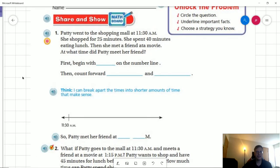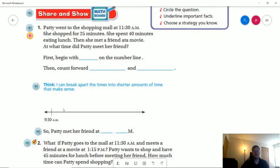So let's go ahead and take a look at our unlock the problem questions. So number one, Patty went to the shopping mall at 11:30 a.m. She shopped for 25 minutes, then spent 40 minutes eating lunch. Then she met a friend at a movie. What time did Patty meet her friend? So our first thing is going to be starting at 11:30. So we can go ahead and write that in. So we are going to count forward 25 minutes, and then we are going to count forward 40 minutes.